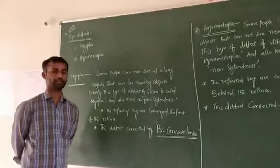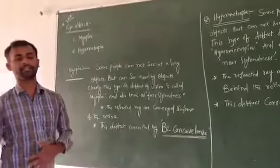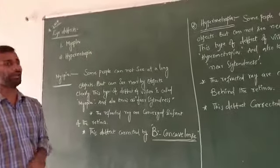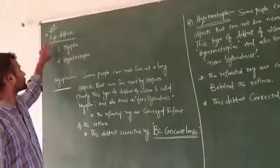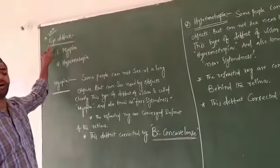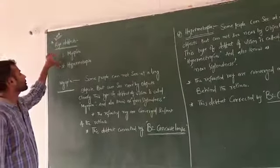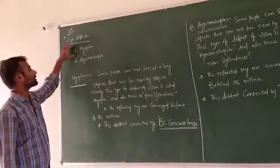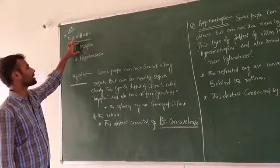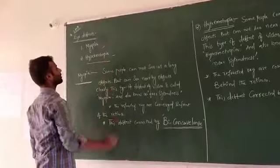Today we will discuss about eye defects. We have already discussed topics with optics. So here, we have also discussed about the eye defects — basically two main types are considered. Eye defects are discussed about two types: one is myopia, and the second one is hypermetropia.